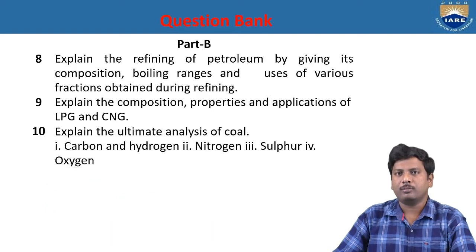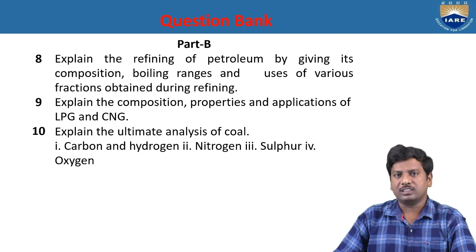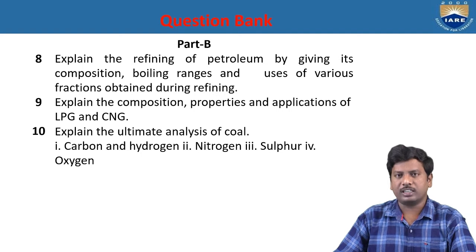Explain the refining of petroleum, giving its composition, boiling ranges, and uses of various fractions. Refining is the purification of petroleum done in various steps. First, unwanted impurities like sodium chloride and magnesium chloride are removed (they cause corrosion in engines). Then water is removed by electrolysis. After that, fractional distillation is applied to get various fractions: refineries gas at 20°C, petrol at 70°C, naphtha at 120°C, kerosene at 180°C, diesel at 260°C, lubricating oil at 300°C, and fuel oil at 350°C.